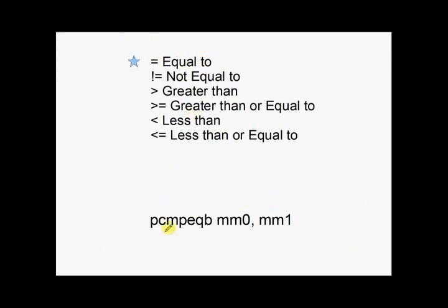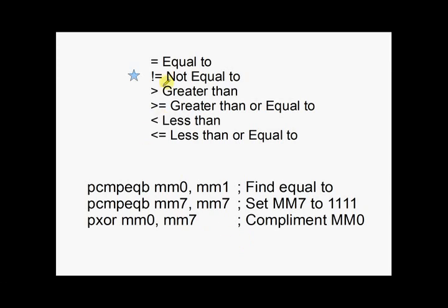Okay. The first one, equal to. This is nice and easy. MMX gives us an equal to. So if we want to find equals to in MM0 and MM1, we just use packed compare equal B.